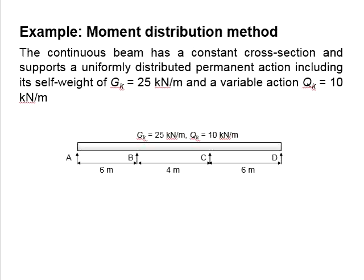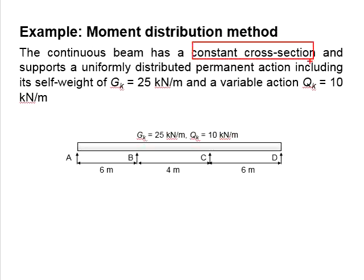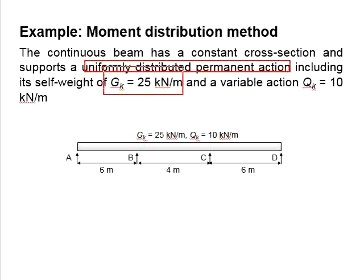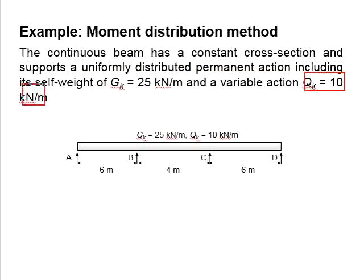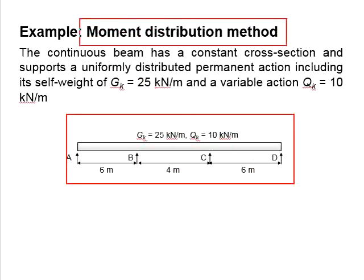Let us try an example on the moment distribution method. There is a three-span continuous member with spans of 6 meters, 4 meters, and 6 meters, with a constant cross-section. There is a uniform distributed permanent action of gk equals 25 kilonewton per meter and qk equals 10 kilonewton per meter. The question asks to determine the shear force and bending moment using the moment distribution method.